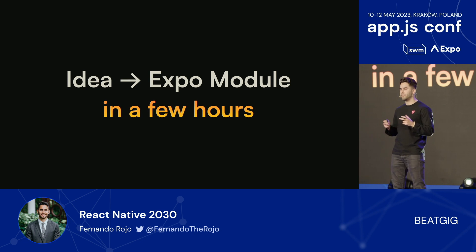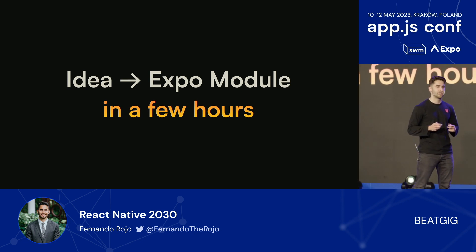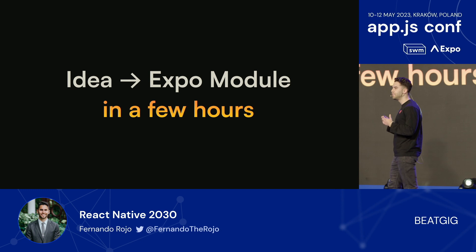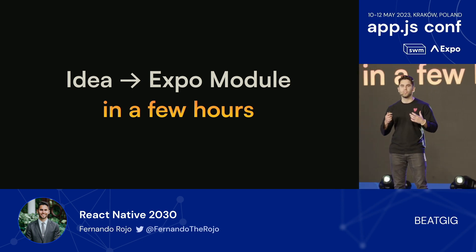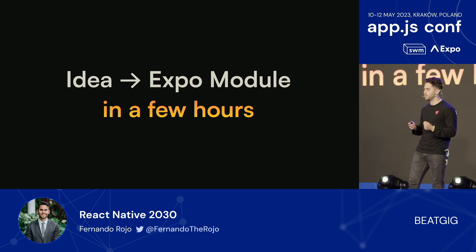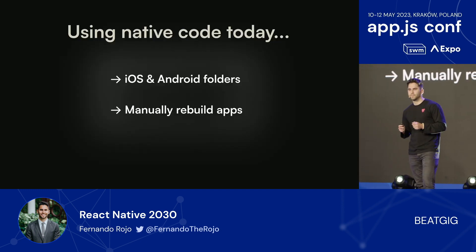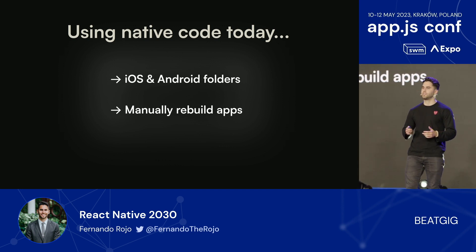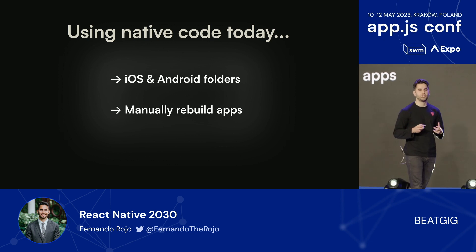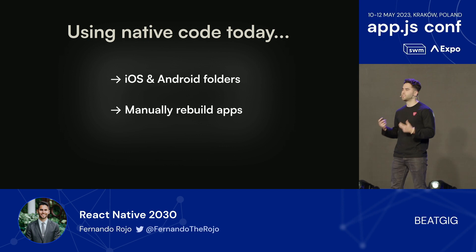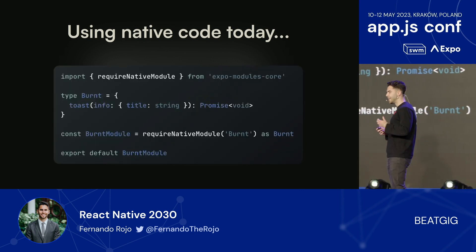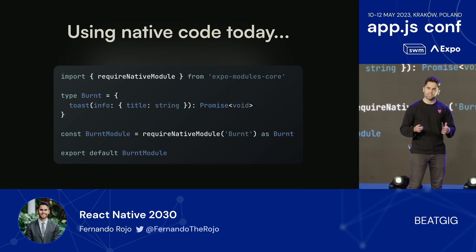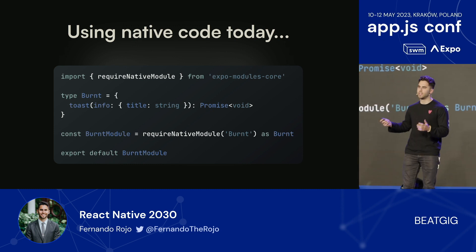In the past year, writing native modules has gotten a lot easier with the introduction of Expo modules. I was able to write my own module with the help of ChatGPT in just a few hours, called Burnt. And even though it's very simple, it gave me a lot of insight into what the experience is writing native code today with React Native. This is what it looks like to do it today: first, you have separate code in your iOS and Android folders where you have your Swift and Kotlin files respectively. Every time you make native changes, you have to rebuild your native app and restart the dev server. Next, you have to import your native code using a function called requireNativeModule. And lastly, if you want to add TypeScript types, you just have to manually cast them.